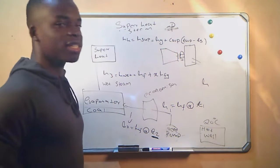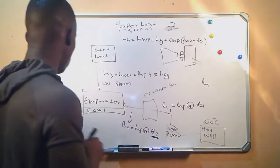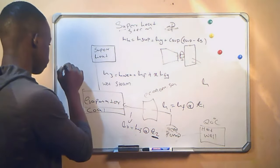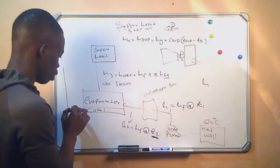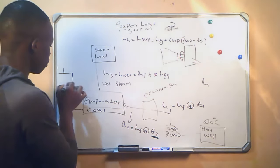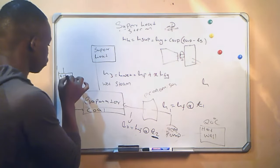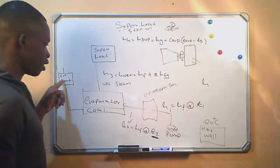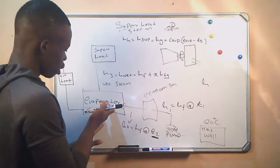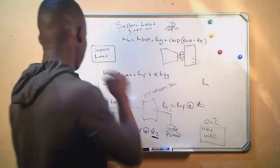Now we know that for combustion to take place we need air, so we are going to drive air into the combustion chamber. That air we will first pass through an air heater. We do this to improve the process in the combustion chamber, sort of like what we are doing with the economizer.